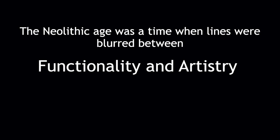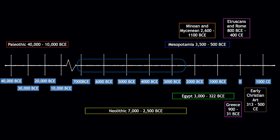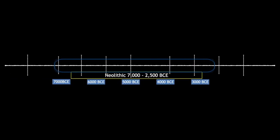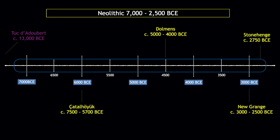Today things are going to progress a bit. This is our timeline and you can see that we have skipped ahead a lot. This period lasts from about 7,000 BCE to about 2,500 BCE, and you can see that it overlaps with some other cultures that we'll study, like the Egyptians and the Mesopotamians. Focusing in on that timeline, here are some specific things we'll talk about: the town of Çatalhöyük and giant structures known as dolmens.